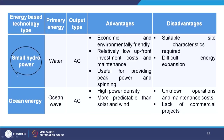Small hydropower uses water as the primary energy with an AC output. The major advantages are that it is economical and environmentally friendly with relatively low upfront investment cost, low maintenance, and useful for providing peak power and spinning reserves. The disadvantages are that suitable site characteristics are required and energy expansion is difficult. Ocean energy is an upcoming technology where the primary energy is ocean waves with an AC output.